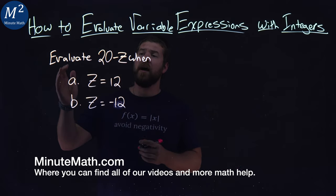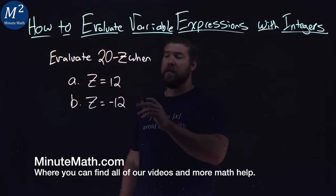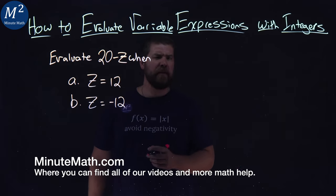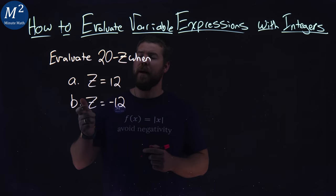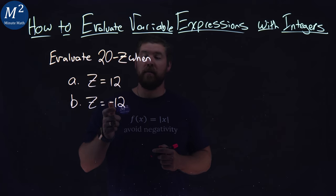We're given this problem here: evaluate 20 minus z when z equals 12 and z equals negative 12. I think this is a great example to highlight what happens with just one little negative number added.